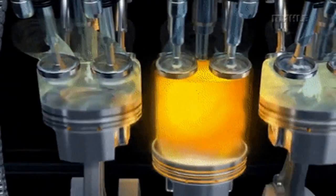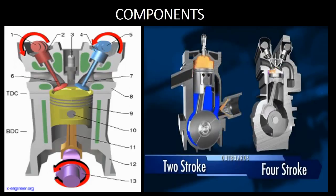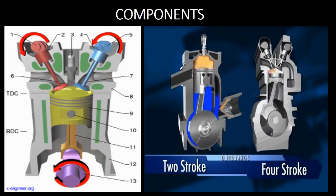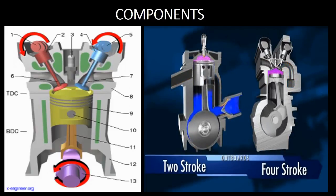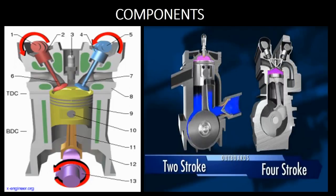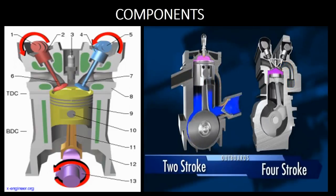Components of an internal combustion engine: number one, exhaust camshaft; number two, exhaust valve bucket; number three, spark plug; number four, intake valve bucket; number five, intake camshaft; number six, exhaust valve; number seven, intake valve; number eight, cylinder head; number nine, piston; number ten, piston pin; number eleven, connecting rod; number twelve, engine block; number thirteen, crankshaft. TDC stands for top dead center and BDC for bottom dead center.